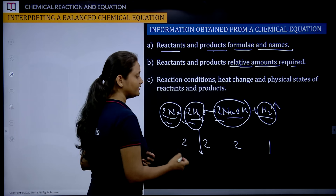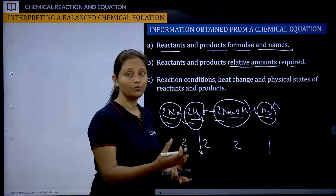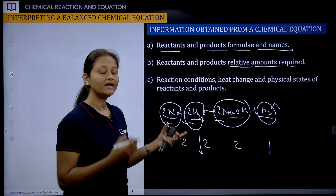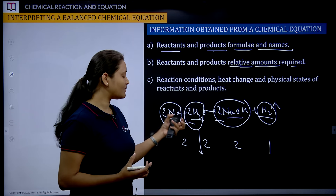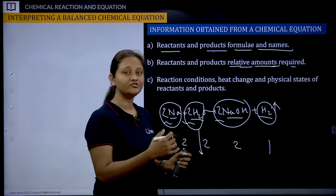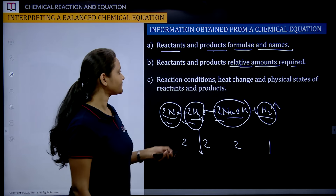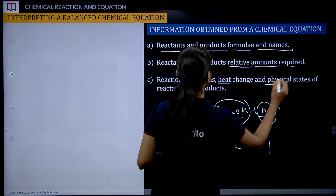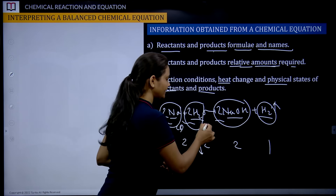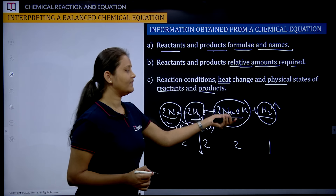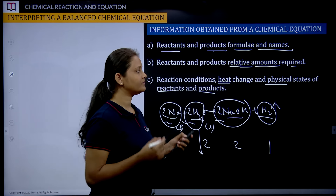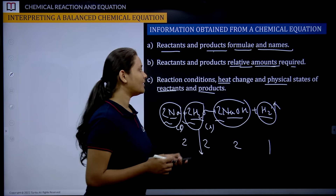We can also calculate molecular mass — how much mass is involved to produce a certain amount of products. Mass-to-mass relationships are conveyed from this reaction. Also, reaction conditions such as heat change and physical states of reactants and products are indicated. So we know sodium is solid, water is liquid, and hydrogen is released as gas.